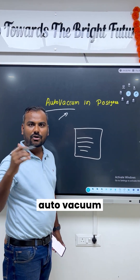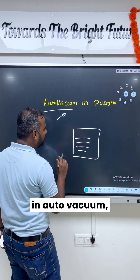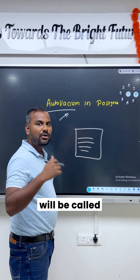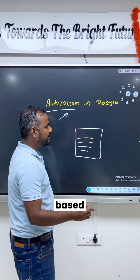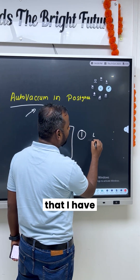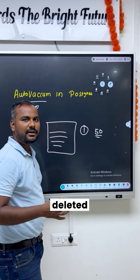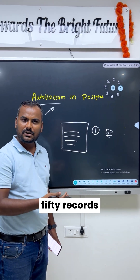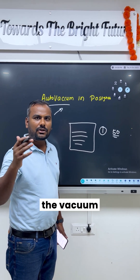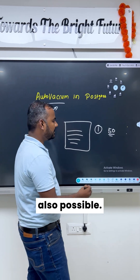In Vacuum, there is Auto Vacuum available and Manual Vacuum available as well. In Auto Vacuum, the vacuuming will be called automatically based on your threshold. Threshold means, let's say you have inserted, deleted, or updated some 50 records — at that point, the vacuuming should be called automatically. That is also possible.